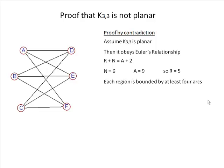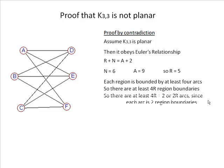Now each region is bounded by four arcs this time because the arcs are going across and back and across and back. So to bound a region there must be at least four arcs. So there are at least 4R region boundaries, or 4R/2 which equals 2R arcs, since each arc is two region boundaries. Each arc separates two regions. 2 × 5 = 10, so there are at least 10 arcs.